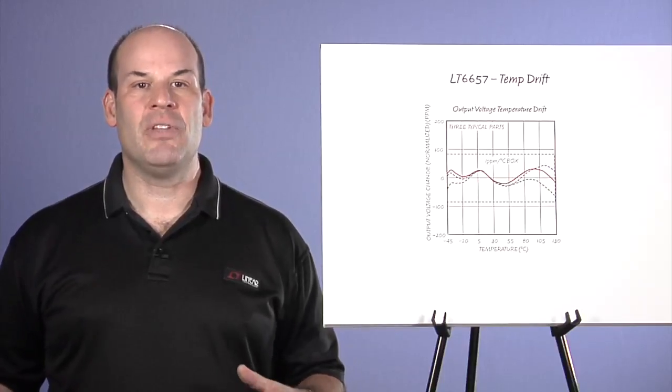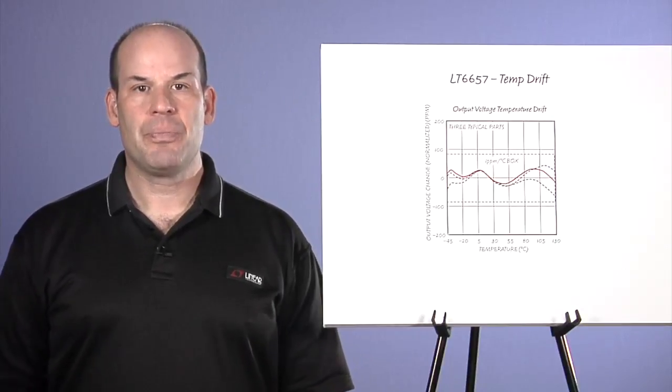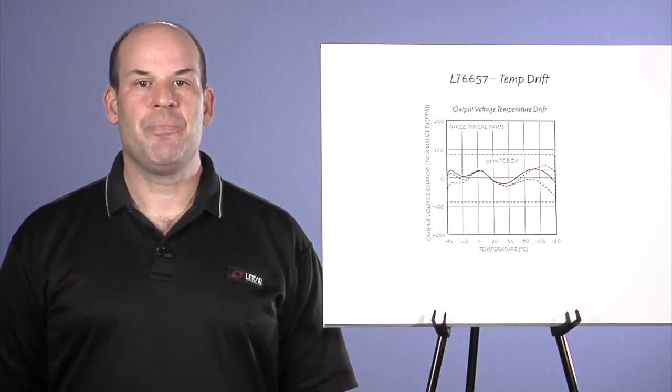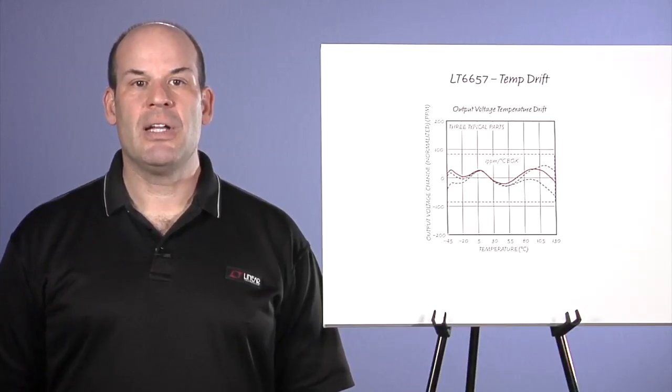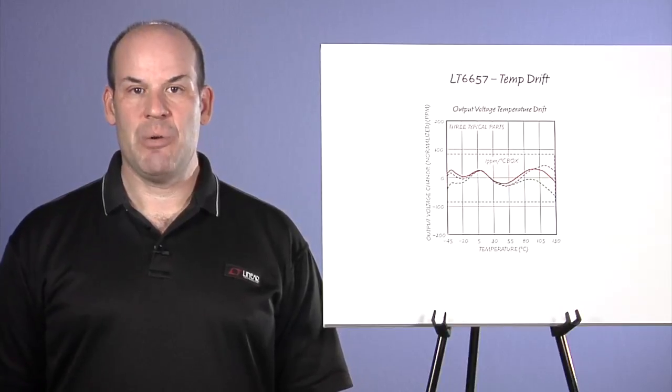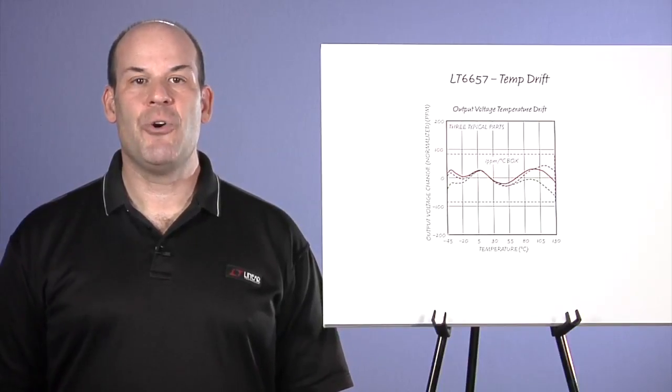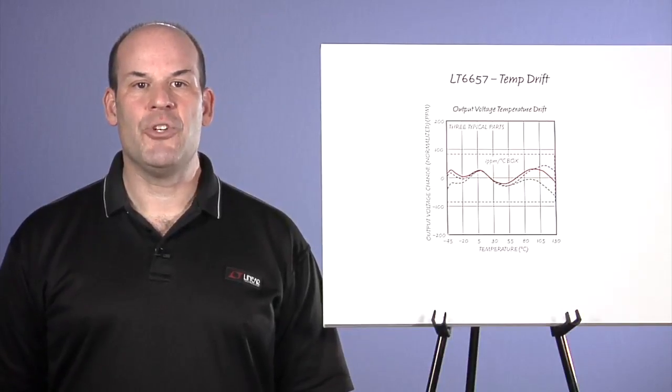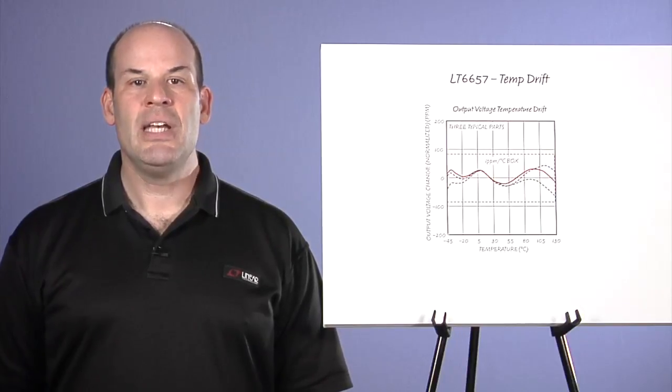High order temperature compensation keeps the output voltage error low and predictable over temperature, while state-of-the-art manufacturing gives consistent performance from part to part and lot to lot. To ensure that every LT6657 shipped meets this high level of performance, LT6657's temperature coefficient is guaranteed by 100% five-temperature testing. This allows a new level of precision for automotive and extended temperature industrial applications, in addition to benchtop instrumentation.